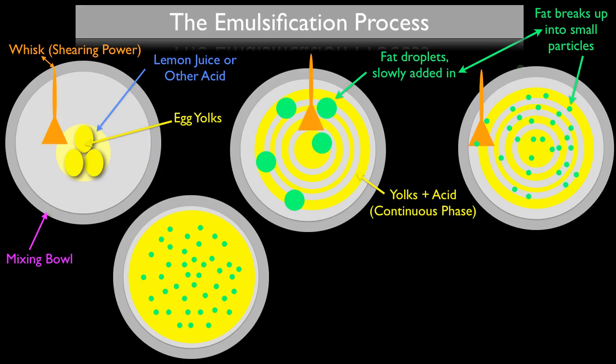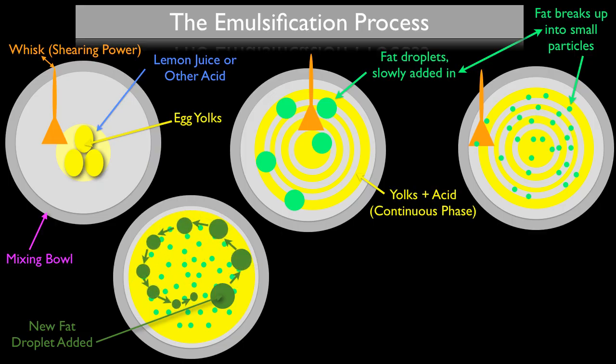When you add a new fat droplet, something kind of cool happens. We'll color it dark green so we can keep track of it. When you add this new fat droplet and continue to whisk it around your bowl, it starts to knock into and bump into all these other already small dispersed fat particles, and as this happens it will actually be broken up just by the force of knocking into each other. The already dispersed fat is going to help break up the new fat and disperse it more evenly into smaller particles throughout the emulsification.